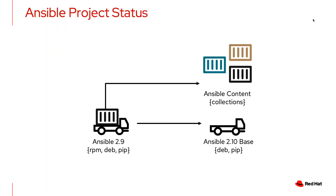The Ansible project — everyone hopefully knows and loves it. It's very popular. It's on the top 10 list for all GitHub upstream community projects. It is so popular that it's actually burying the project maintainers. Ansible 2.9 is the latest upstream GA product for the community, and it includes all of the foundational pieces to actually make Ansible work. It also includes all content — plugins, modules, anything like that.